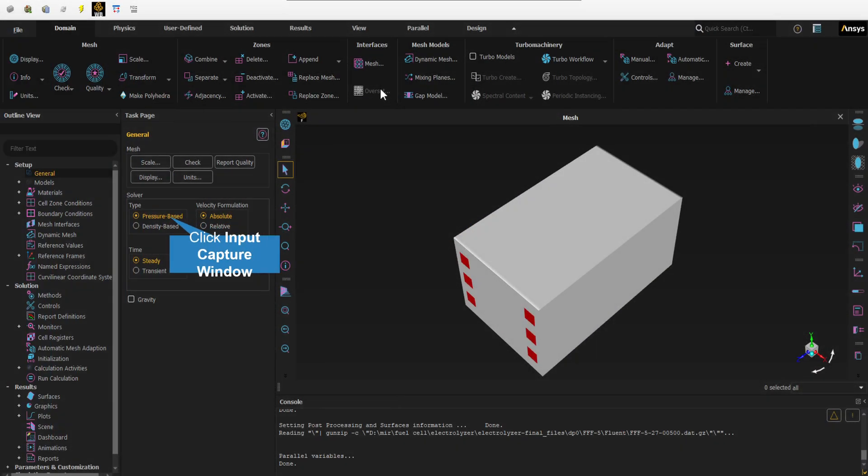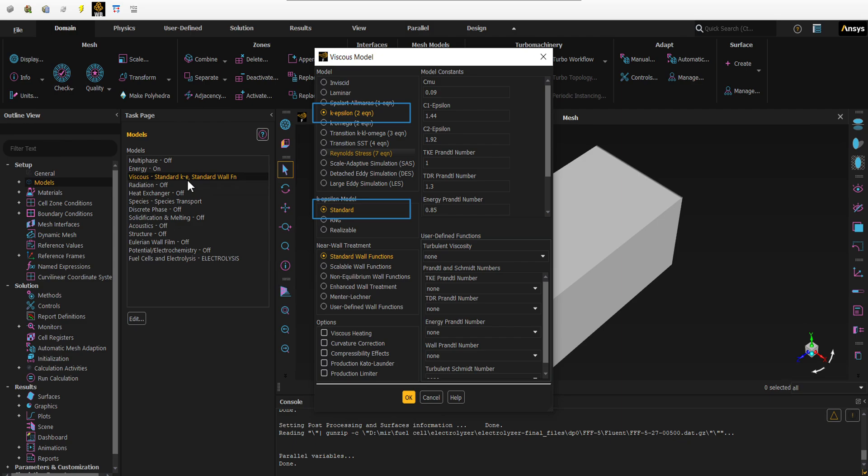In the solver section, we select the pressure-based option. We assume that in our simulation, we have incompressible flow. We have three k-epsilon turbulence models. We select the realizable k-epsilon model.